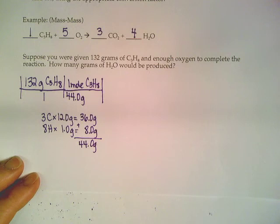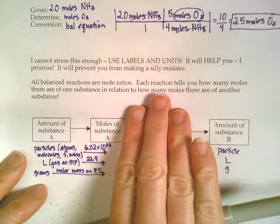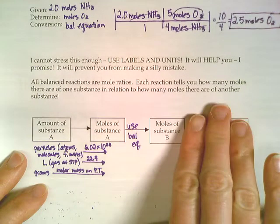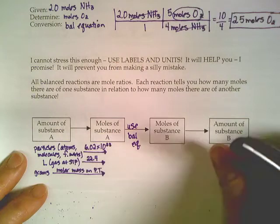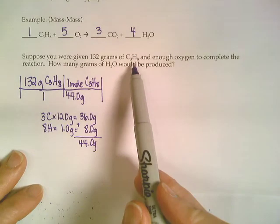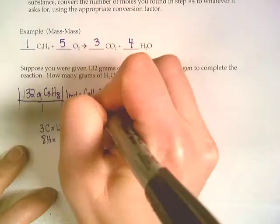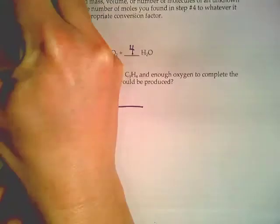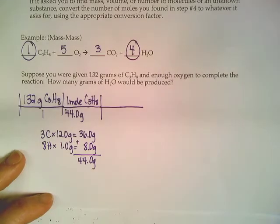Right now that looks like a mole problem that you did before, where we got our substance from grams into moles. And we used to stop there, but now we're going to keep going. Now we're going to use our balanced equation to get from chemical A to chemical B. So in this case, we're at C3H8 and we're trying to get to water. So we're going to look at the mole ratios between C3H8 and water. It's a 1 to 4 ratio.